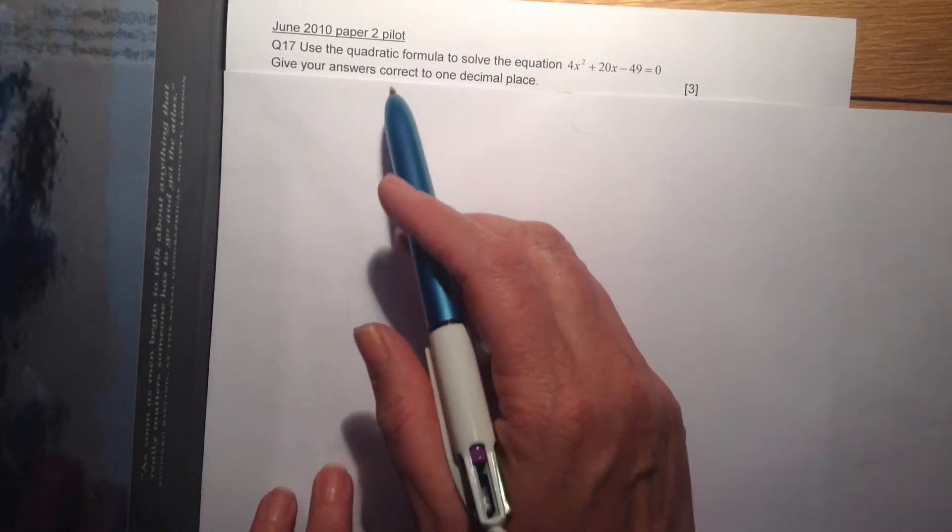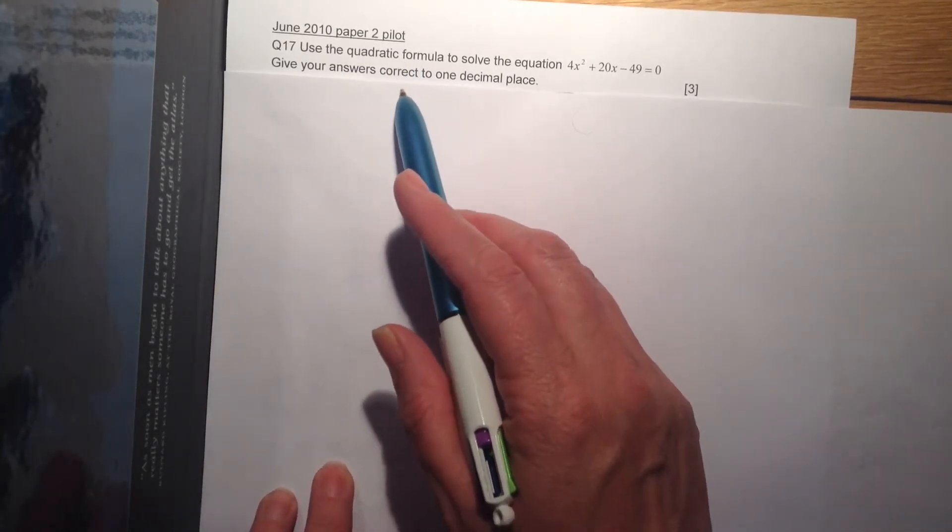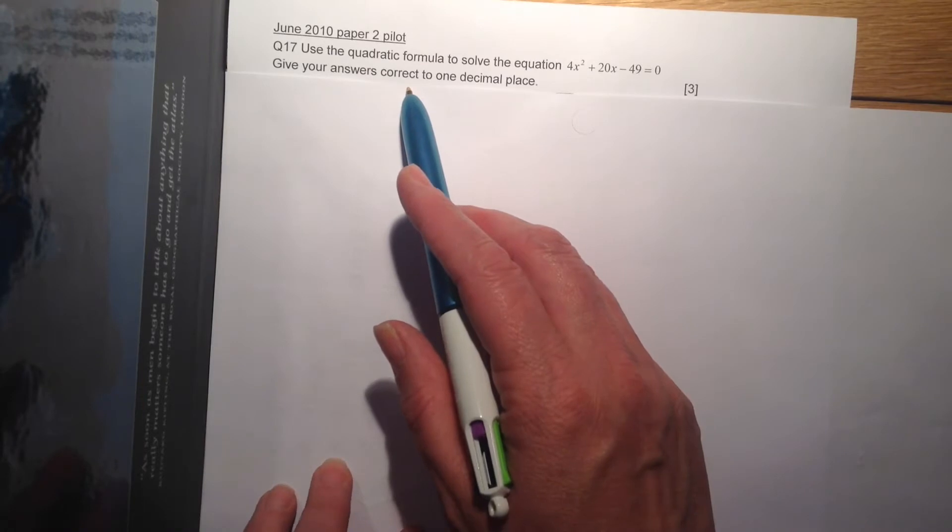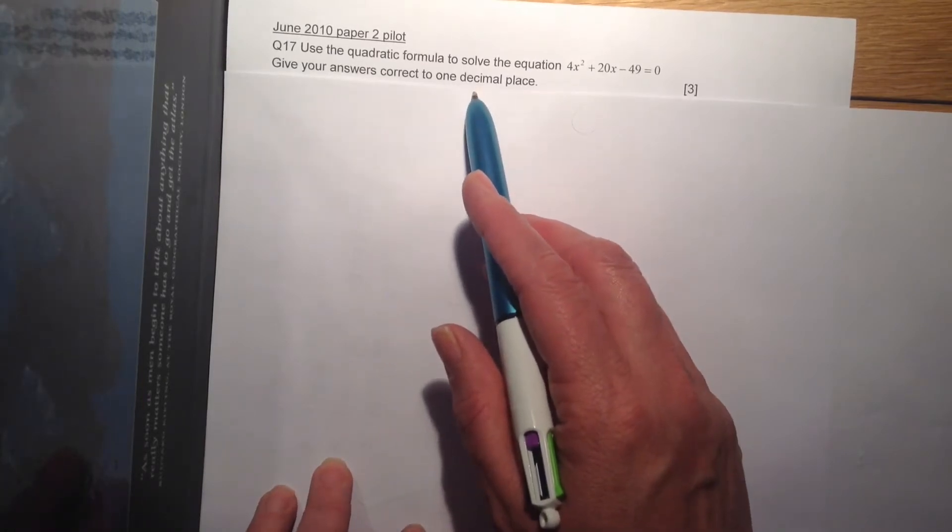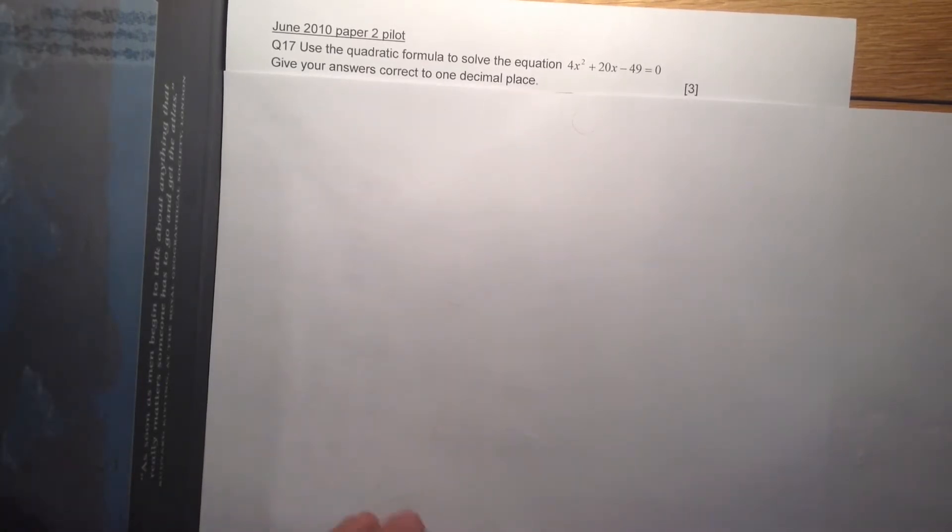Using the quadratic formula. Now the clue to the quadratic formula is actually in this problem, but if it doesn't say it, it will tell you to give your answers correct to one decimal place or two decimal places. And that will be your clue that it is the quadratic formula.